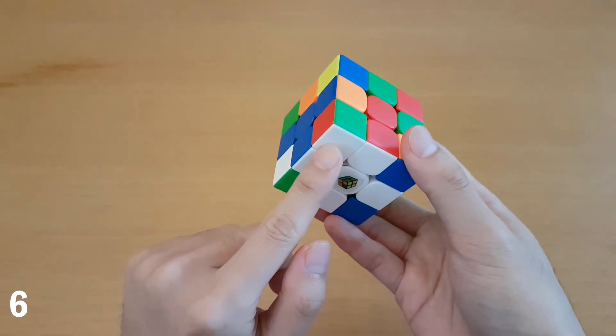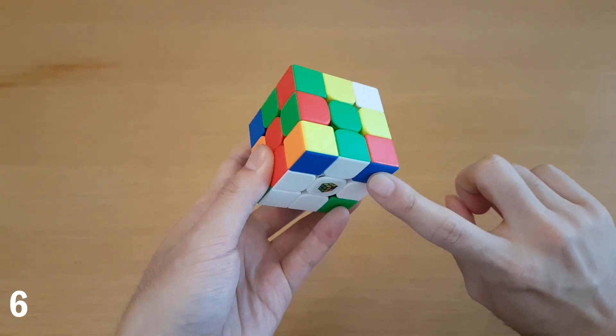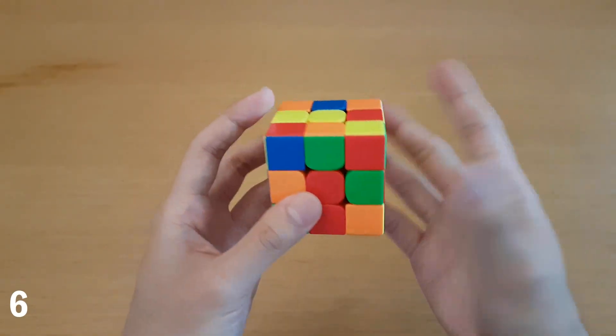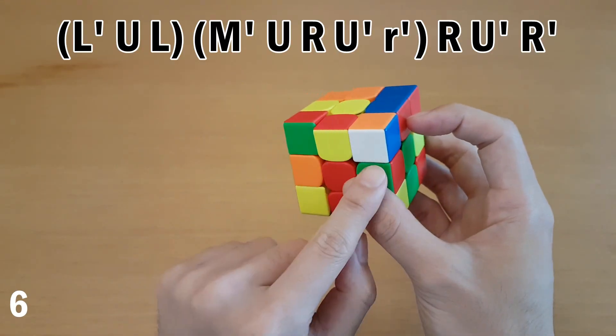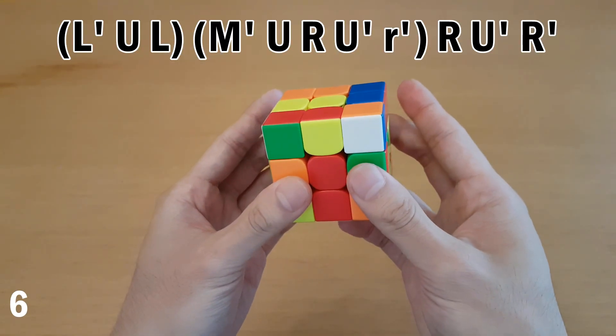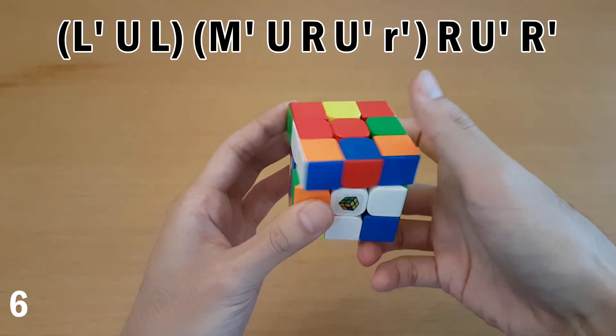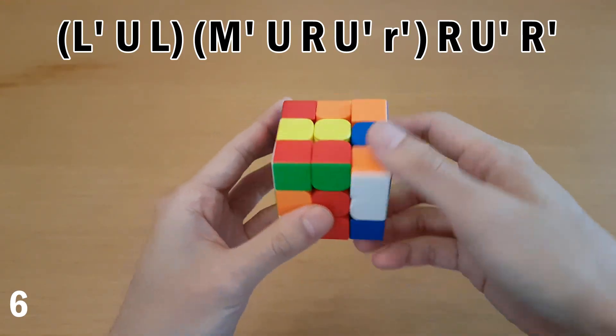And finally, for white corner on the bottom, again, just like when it was over here, I'm not sure if this is the best way, but it's the way that I have prepared. And that's done by taking out this corner like this, and then solving this case from here, which can be done with this. And then insert the pair.